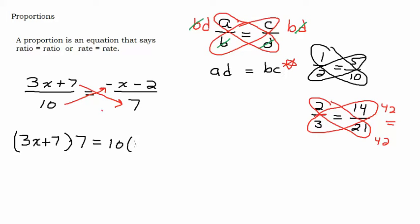So ten times the whole thing, negative x minus two. So that's really important. If you have more than one term in your numerator or your denominator, when you do this cross-product property, make sure you put that in parentheses. That's a common mistake.